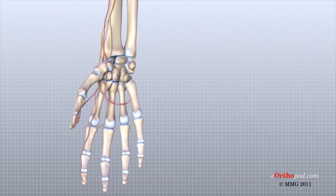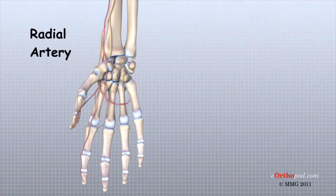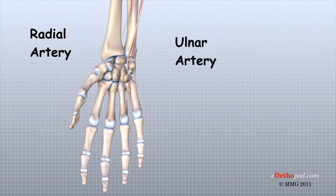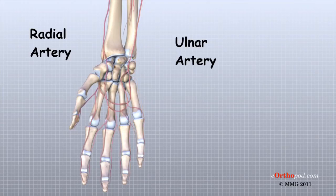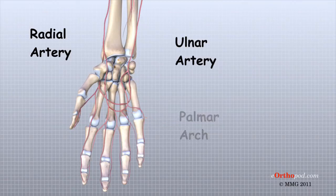Traveling along with the nerves are the large vessels that supply the hand with blood. The largest artery is the radial artery, which travels across the front of the wrist closest to the thumb — the radial artery is where the pulse is taken in the wrist. The ulnar artery runs next to the ulnar nerve through Guyon's Canal. The ulnar and radial arteries arch together within the palm of the hand, supplying the front of the hand, fingers, and thumb. Other arteries travel across the back of the wrist to supply the back of the hand, fingers, and thumb.